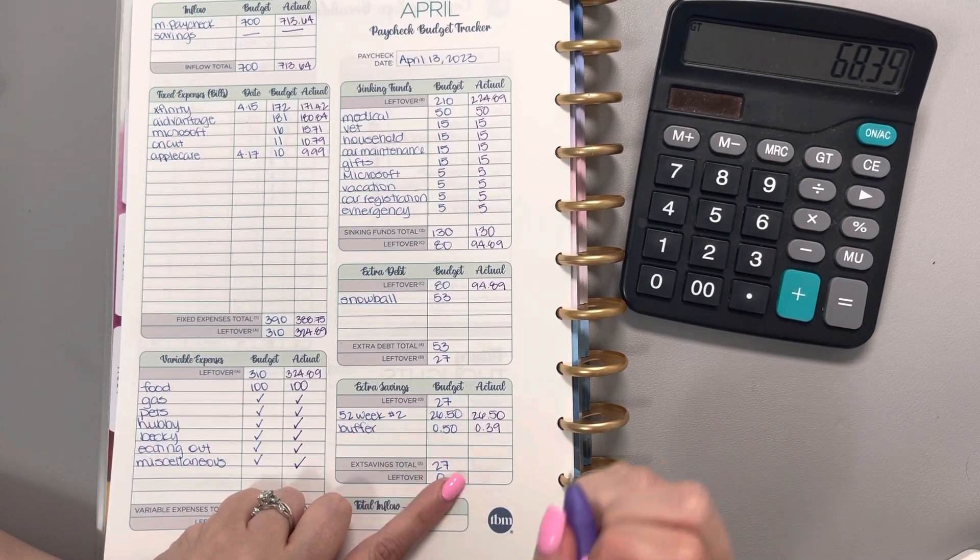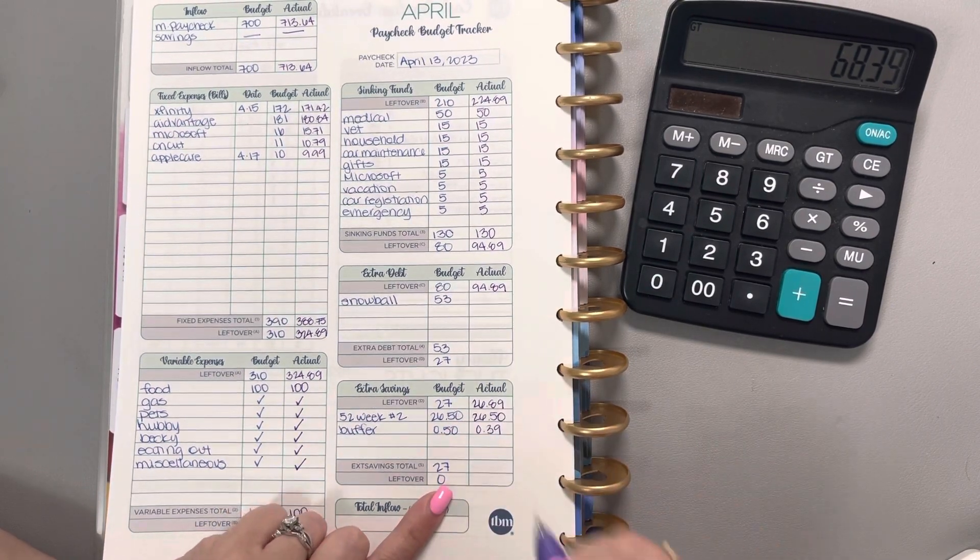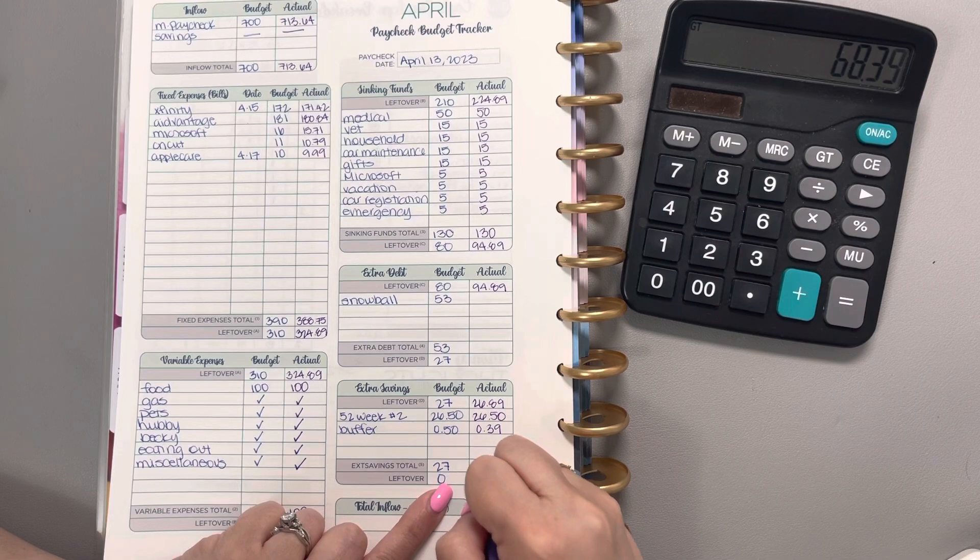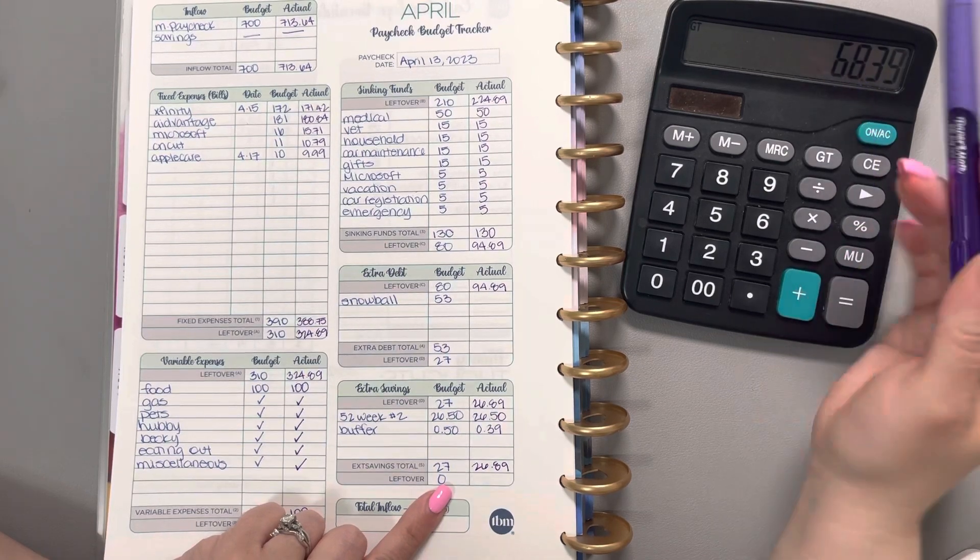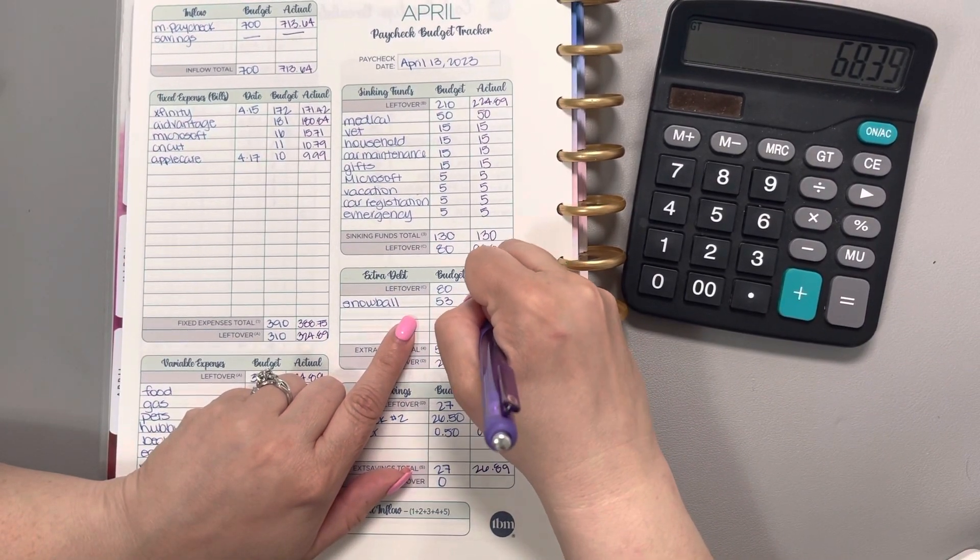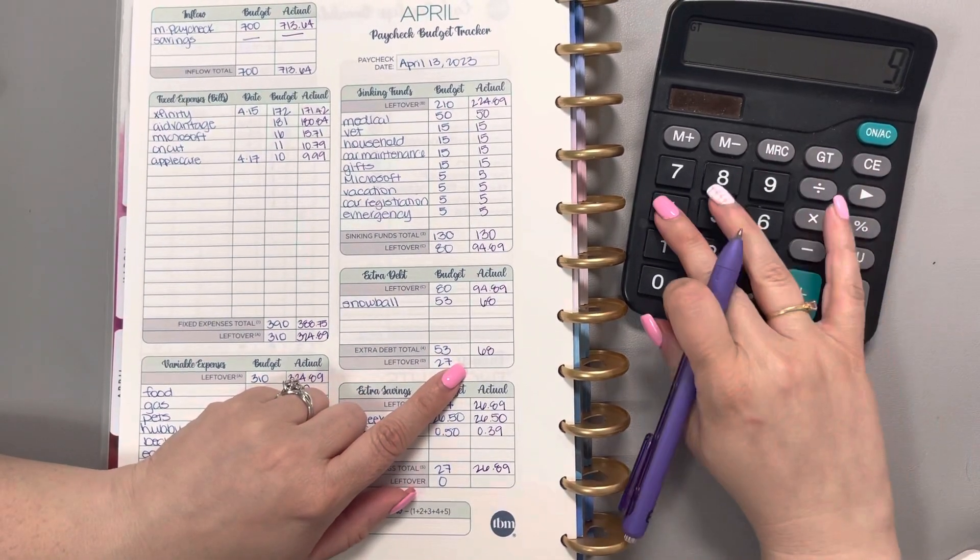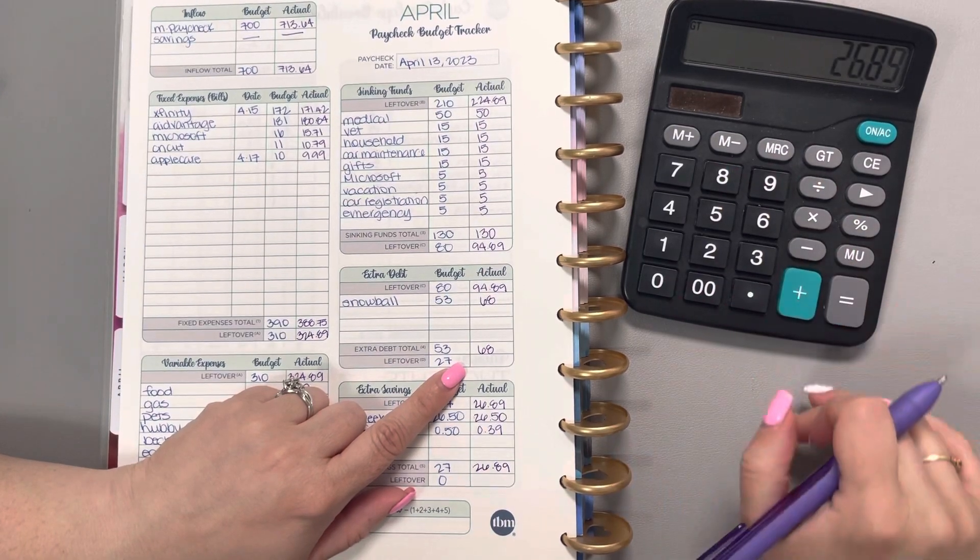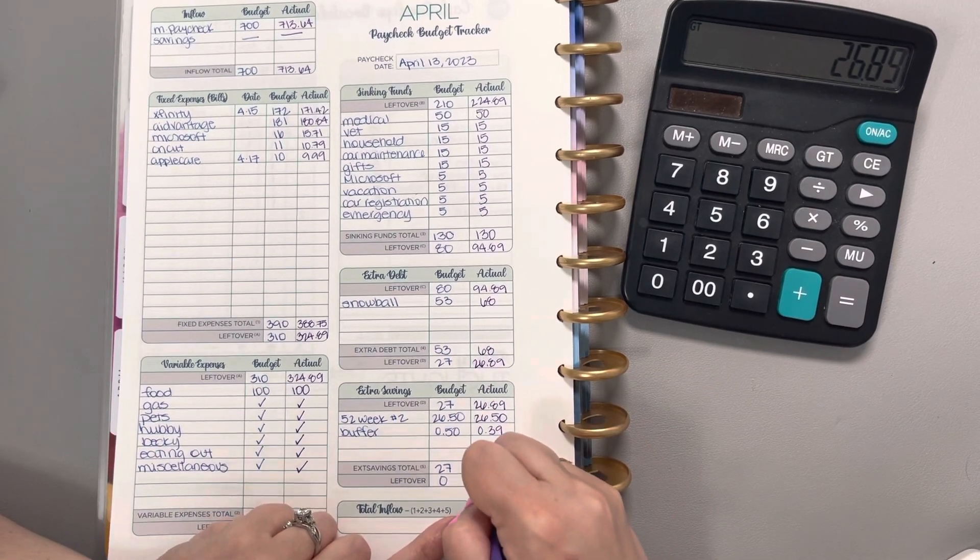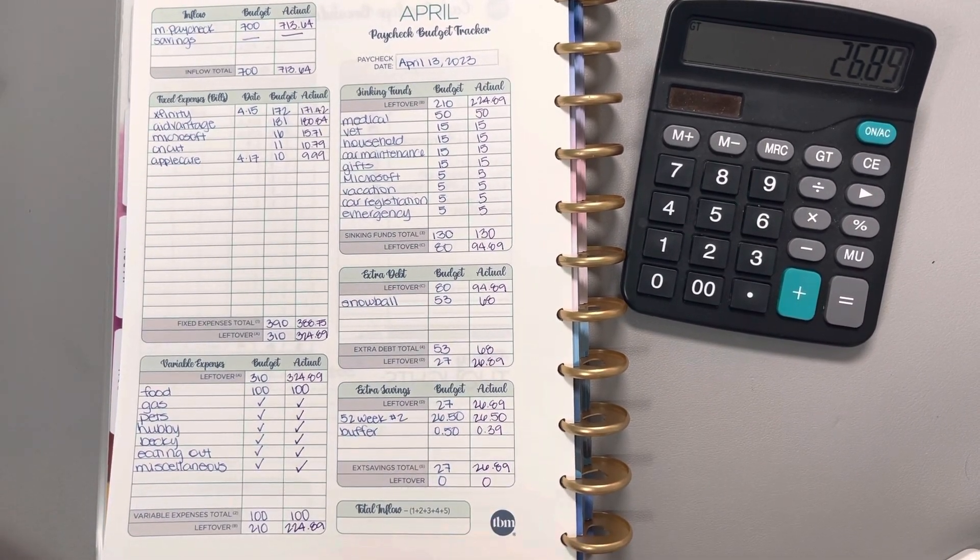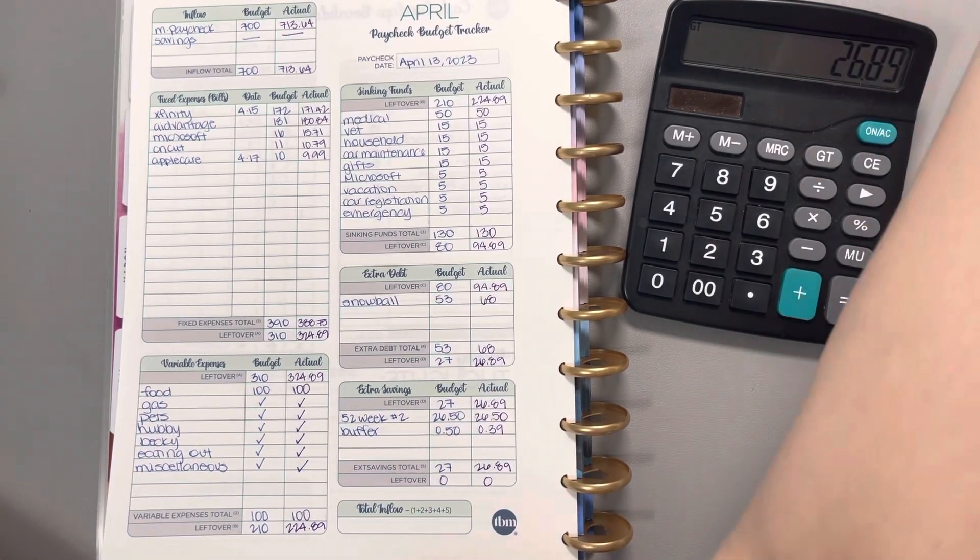That tells me we need $26.89 to get a zero-based budget, and the $68 here are going into our snowball. Not too bad. So $94.89 minus $68 leaves us with the $26.89 we need for that zero-based budget. I'm so happy we were able to put something more than $2 into our snowball this week.